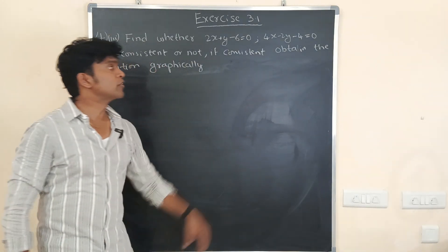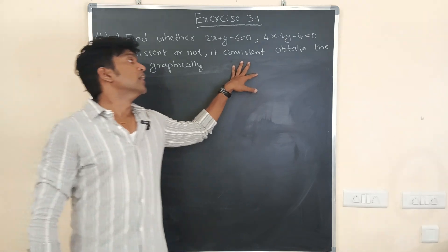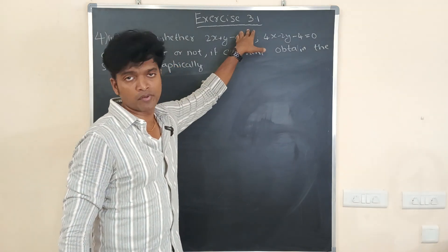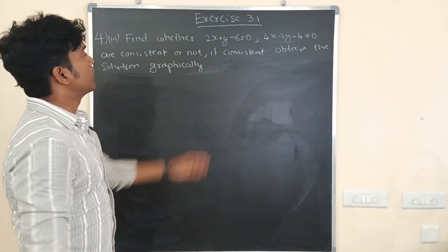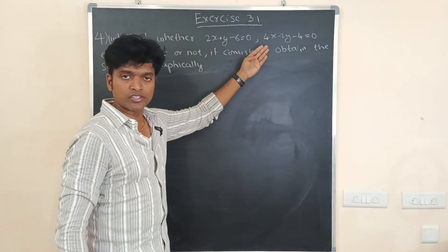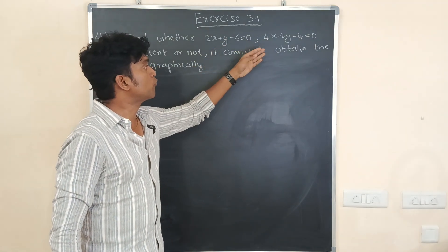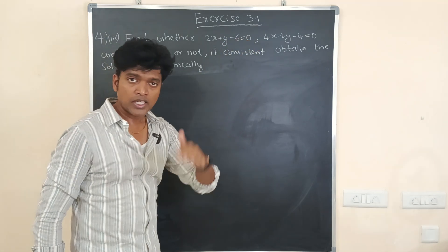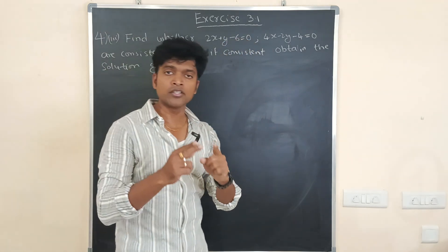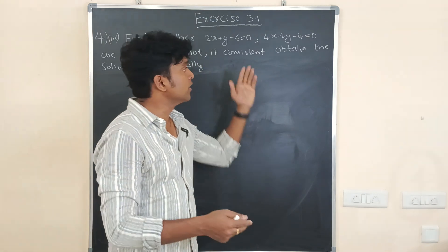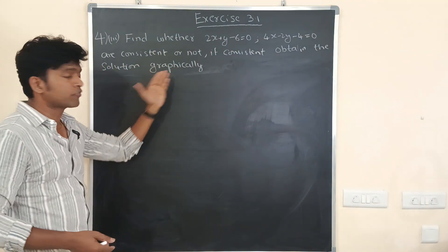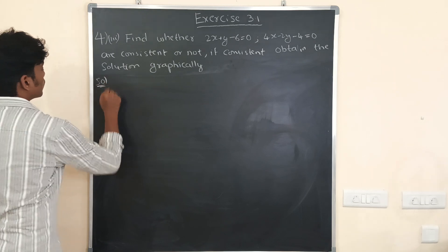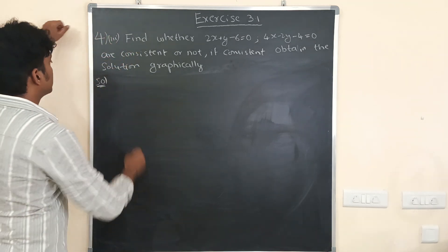Hello everyone, today we are going to solve this problem from the chapter pair of linear equations, exercise 3.1. They have given two linear equations and we have to find whether these two equations are consistent or not. Consistent means the two equations should be intersecting or coincident, and then we have to obtain the solution graphically. First of all, let's check whether they are consistent or not.